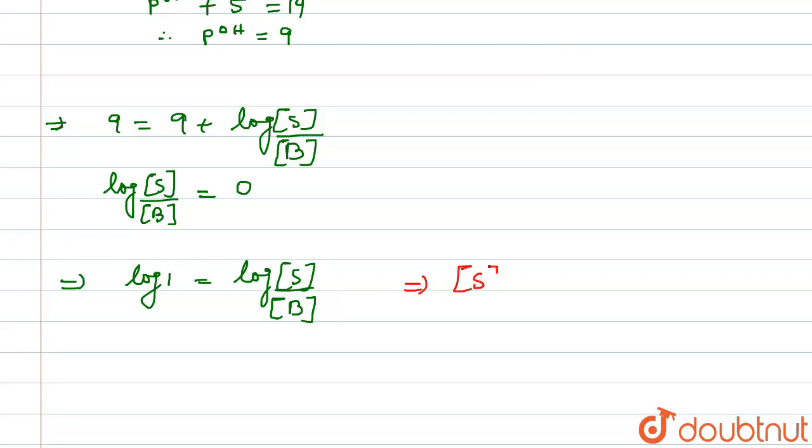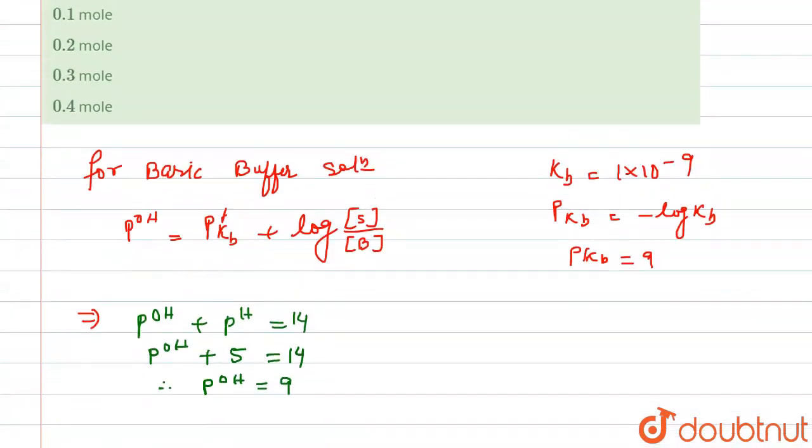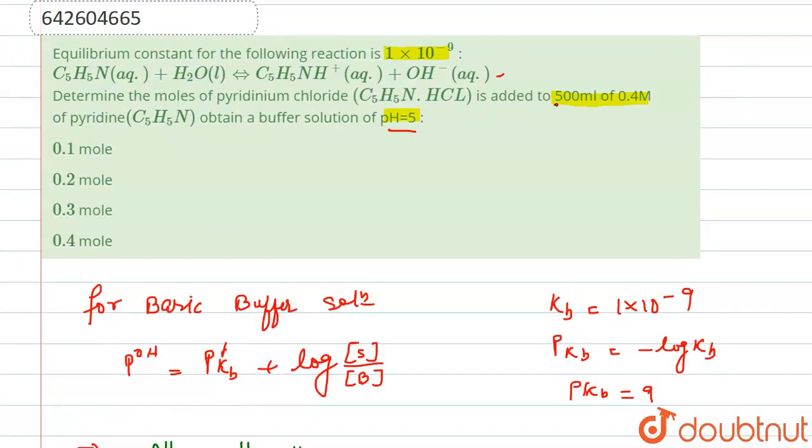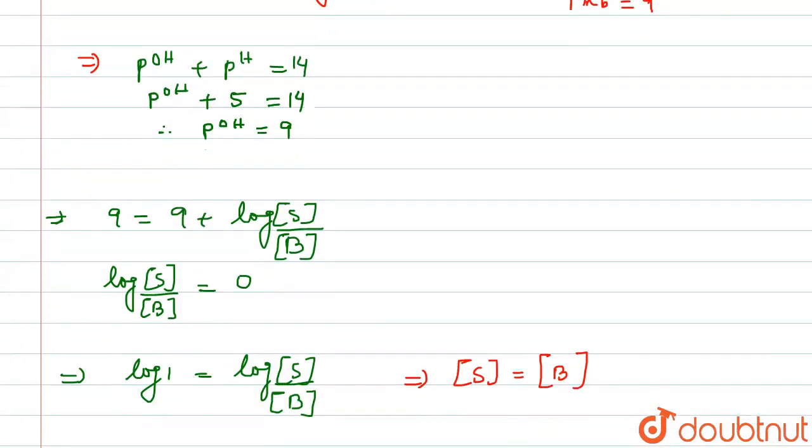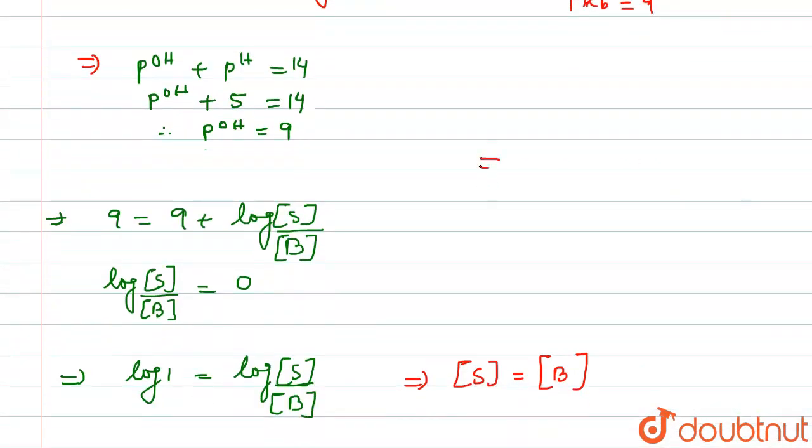Calculating the millimoles now, we have 500 mL of 0.4 molar pyridine. For this we calculate moles equals molarity times volume. For half liter, half times 0.4 will be 0.2.